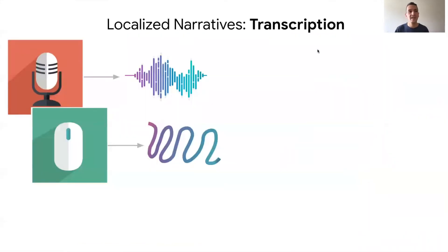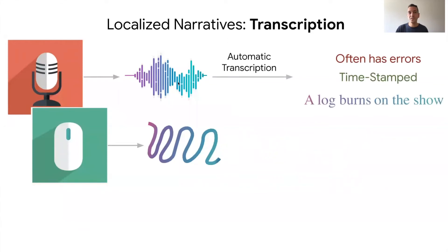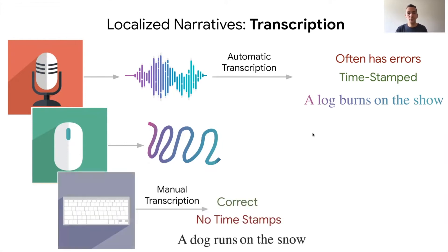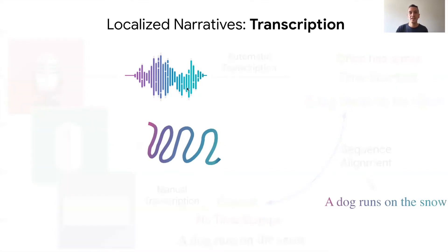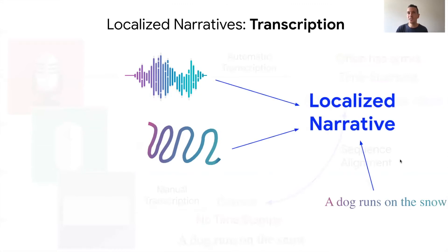How do we get to this nice data? The raw input is speech as sound and the mouse trace. We run an automatic transcription of the speech and get a sentence — this process preserves timestamps giving synchronicity, but it often has errors. So we ask annotators to listen to their own voice recording and manually transcribe it. This gives a perfectly correct transcription, but without timestamps, so we cannot connect it to the mouse trace. We perform sequence-to-sequence alignment to match these two sources of transcripts, getting the best of both worlds: a perfect transcript with timestamps connecting it to the mouse trace. This synchronized voice, mouse trace, and textual caption is what we release as localized narratives.